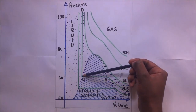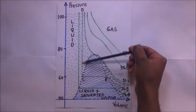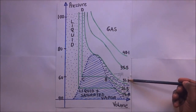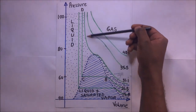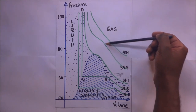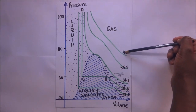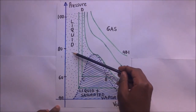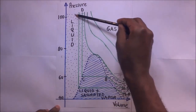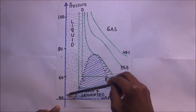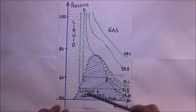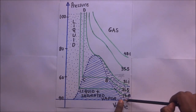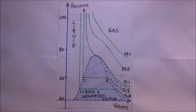By isothermal I mean a line at constant temperature, showing how pressure and volume vary at that temperature. At 31.1°C the pressure and volume vary along that line; at 35.5°C, another isothermal; and at 48.1°C, another. Looking at the graph, the dotted region represents the liquid phase, then there is a region which is a mixture of liquid and saturated vapor, and then there is the unsaturated vapor region.